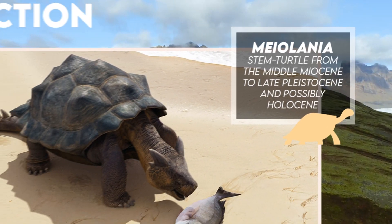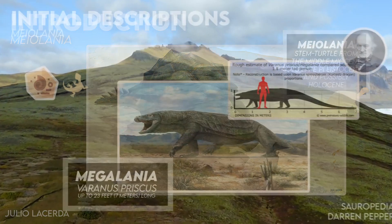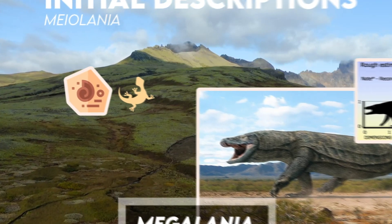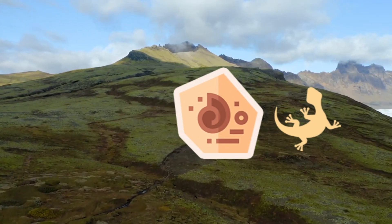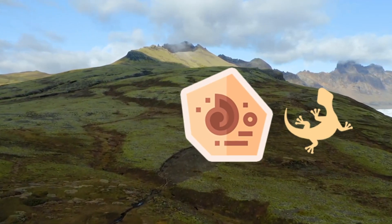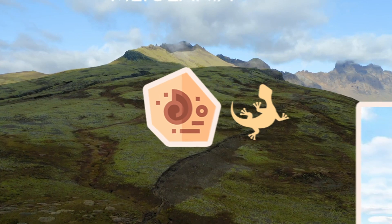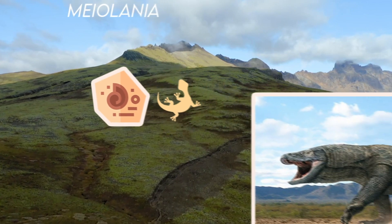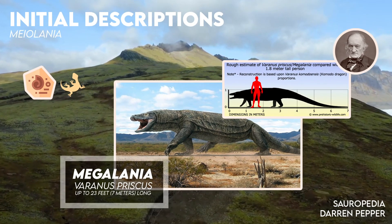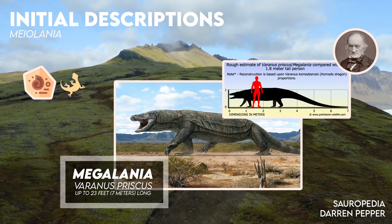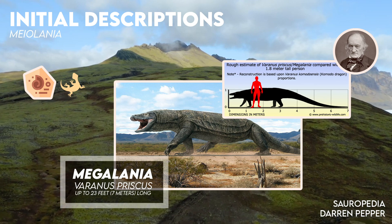When first described from fossil skulls, Myolania was believed to have been a lizard, hence the name which means 'small roamer.' This reflects an earlier description of Megalania, today known as Varanus priscus, which means 'great roamer,' and was also named by Owen in 1859.